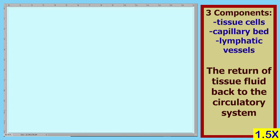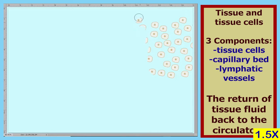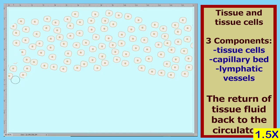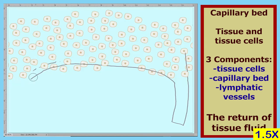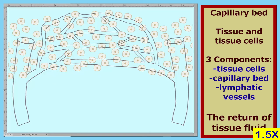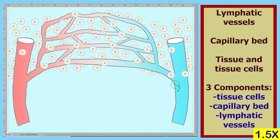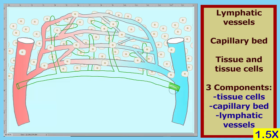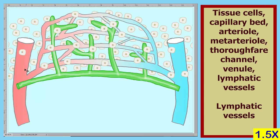First we'll draw all of the components, then we'll look at each of them in turn. Here we have the components of the lymphatic system: the tissue cells, the capillary bed, an arteriole, a venule, a metarteriole, a thoroughfare channel, the capillary bed itself, and lymph vessels.